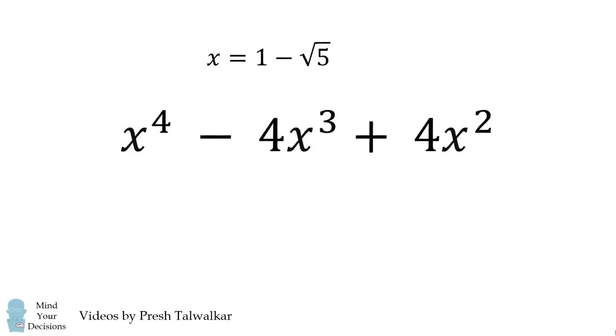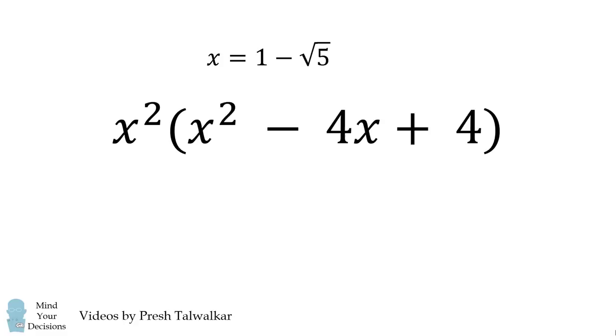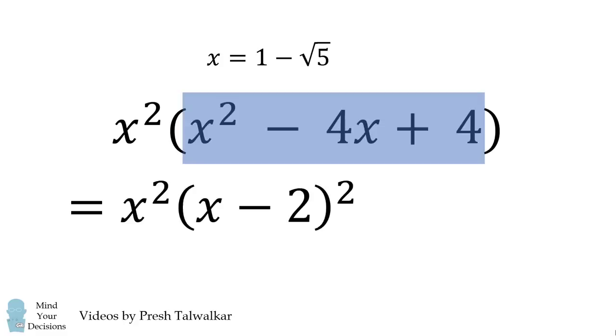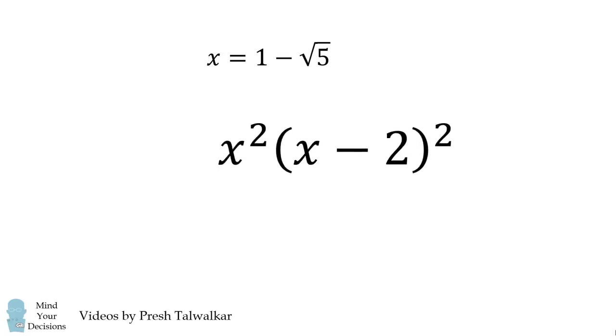So I would instead suggest that you simplify this first by factoring. First, we'll take a look at these x terms. We can factor out x squared. Then we're left with a quadratic equation which we can further factor. This is equal to the quantity x minus 2 squared. We then further simplify by taking the exponent outside this grouping.